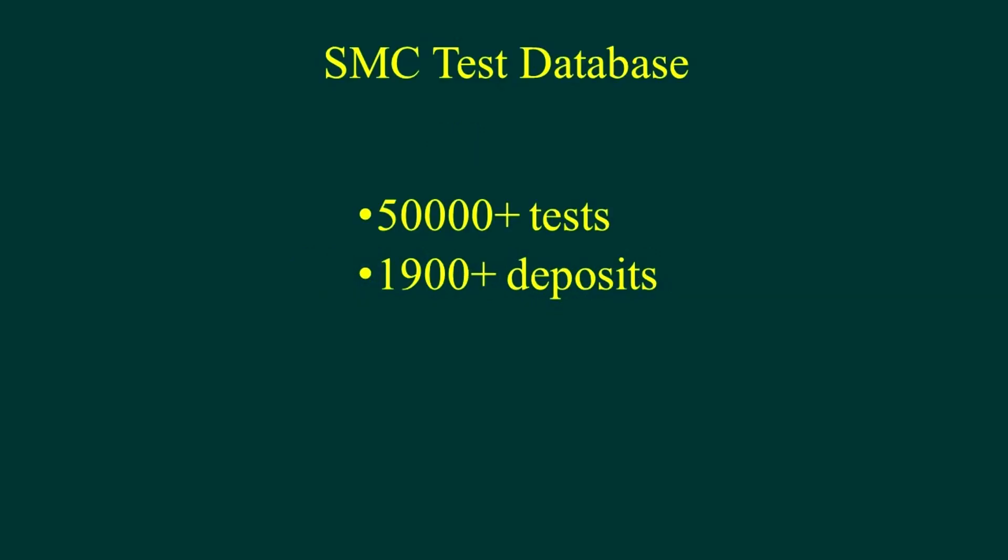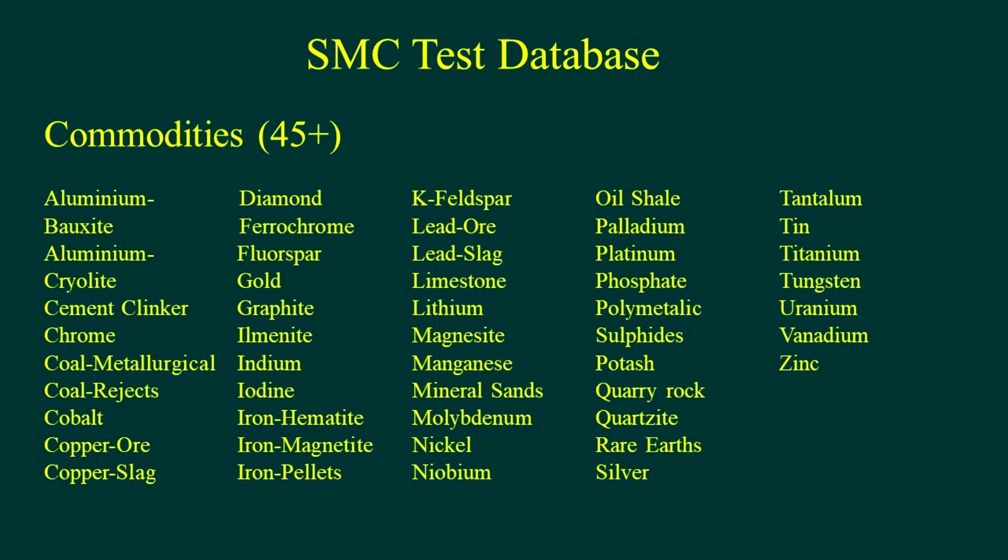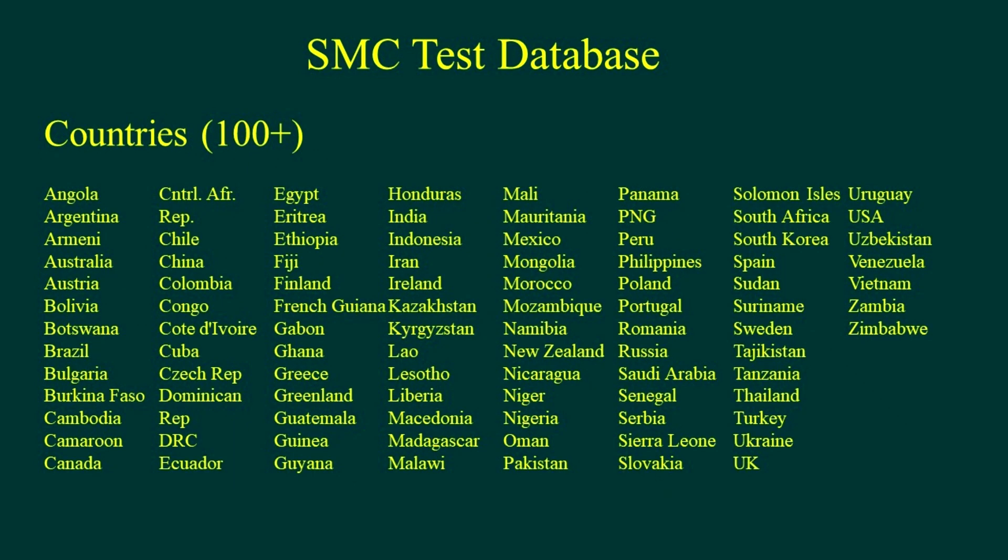That deposit comes from the SMC test database. We believe it's probably the biggest database of its kind in the world. We're now up to 52,000 tests that we've done since 2003, and we're just about approaching 2,000 separate deposits around the world. We've put the database together according to commodities. You can see here all the different commodities we've tested over the years. There's well over 45 of them, and we've also put them together in terms of location. I didn't realize there were quite so many places that do mining. There's over 100 countries around the world where mining takes place and where SMC tests have been done.